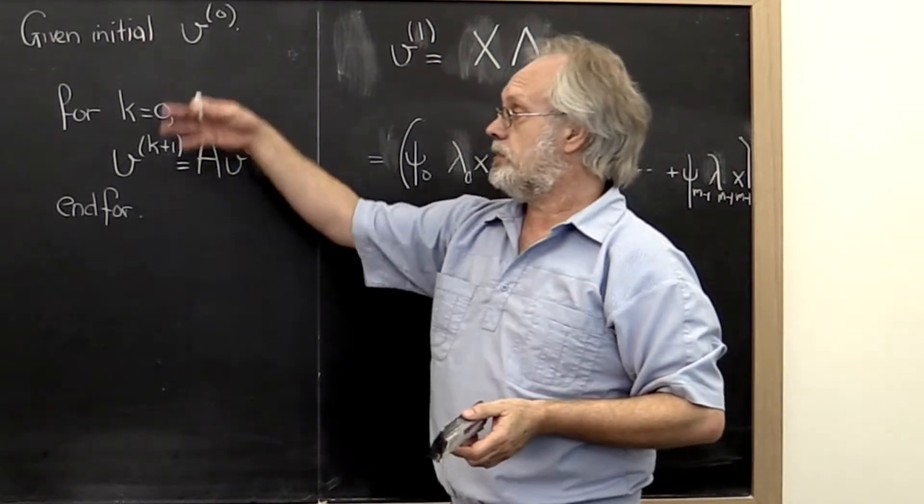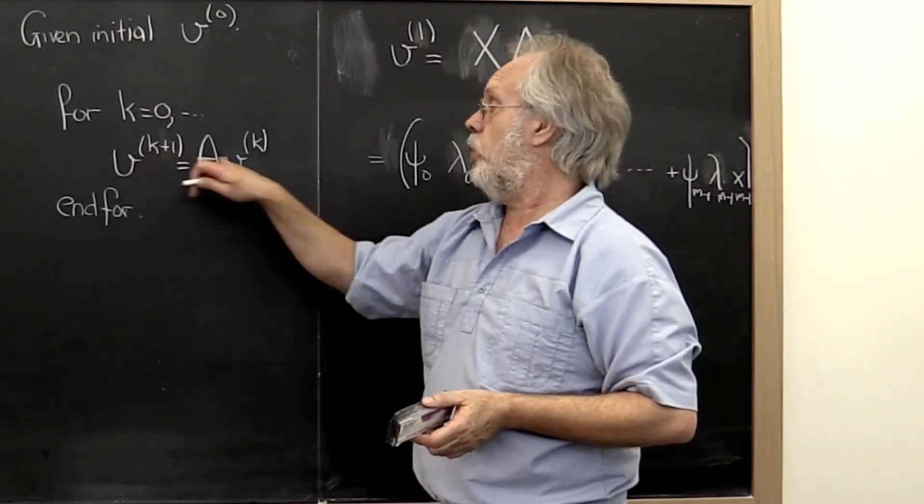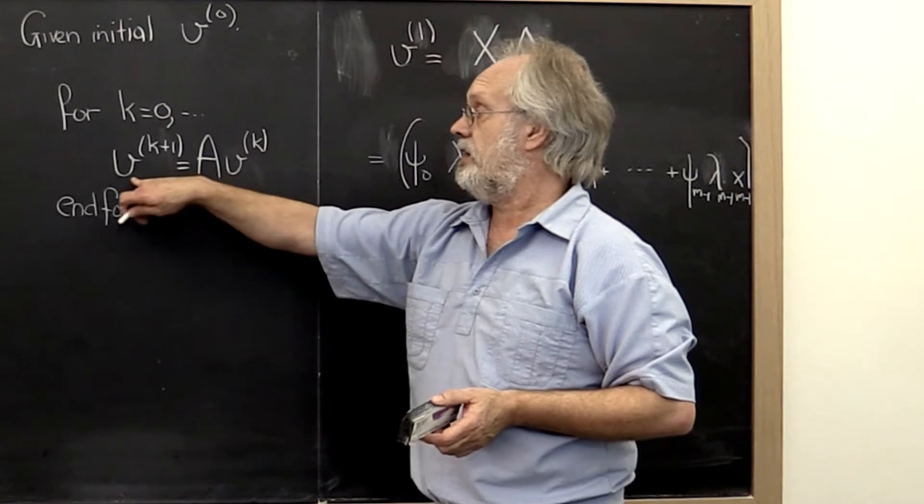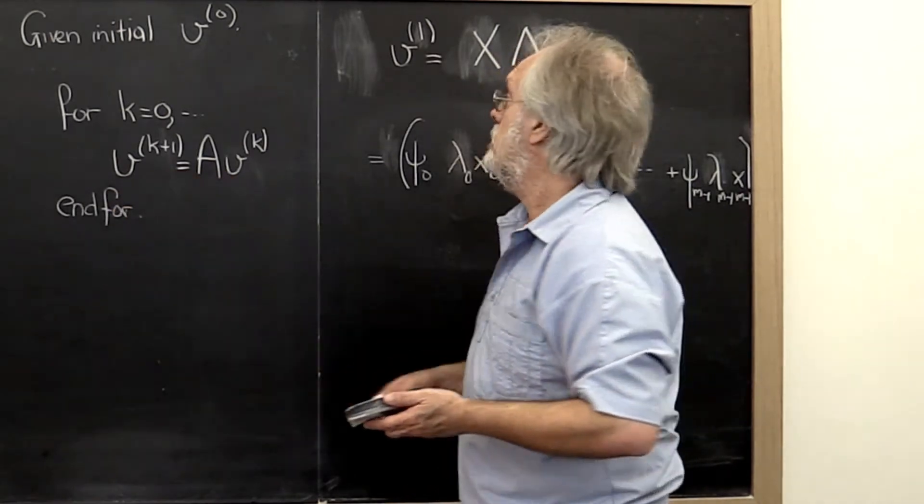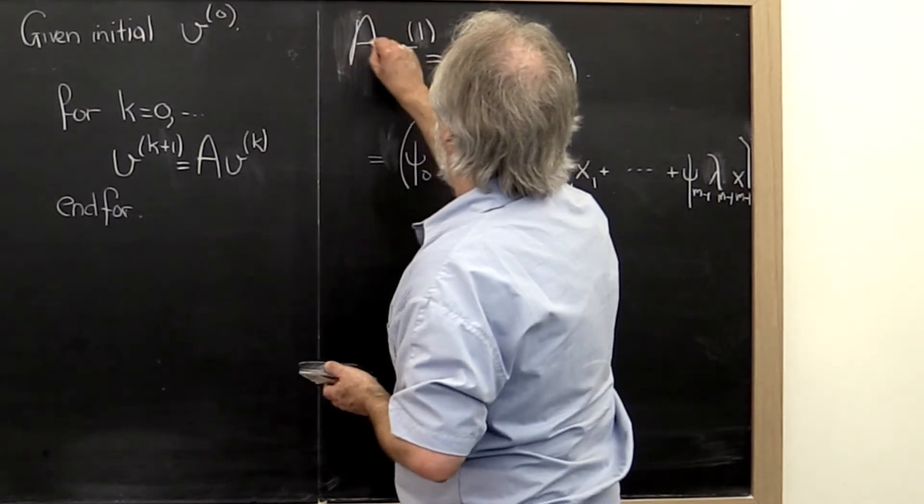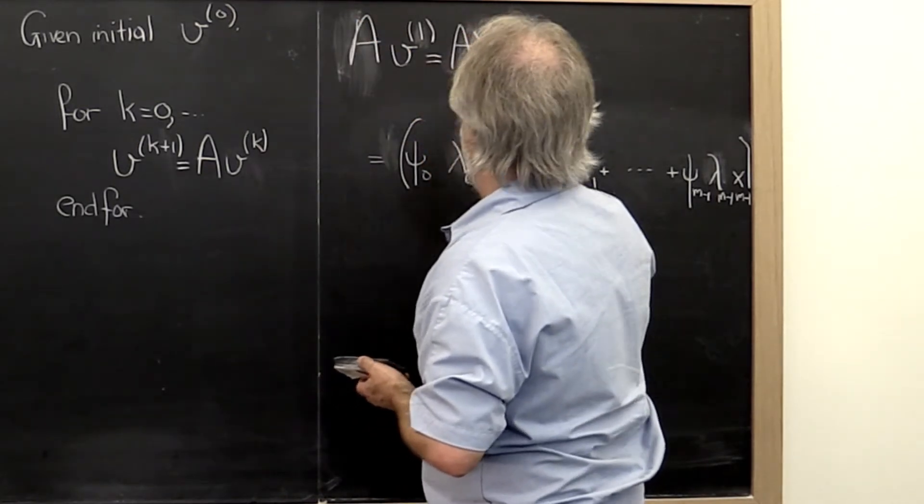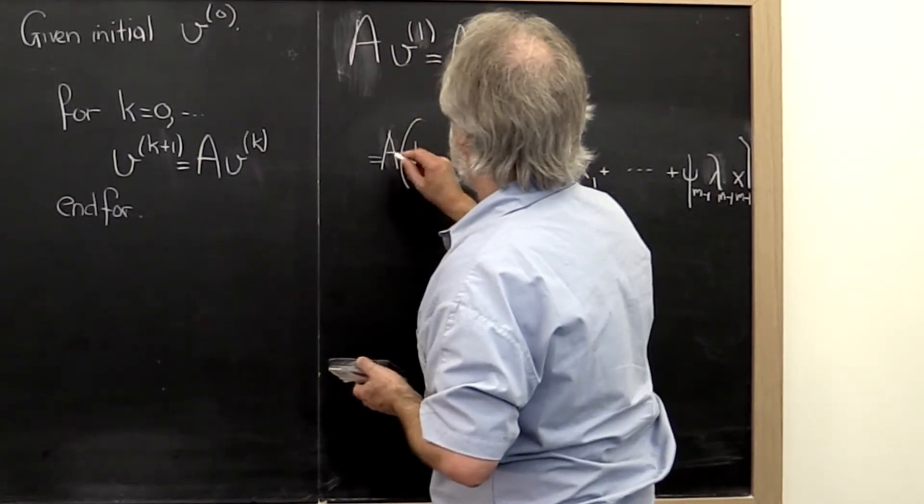We go back to the top of the loop. We take v1. We hit it by matrix A to come up with the next vector v2. So we multiply this by A. That means that we multiply this by A.